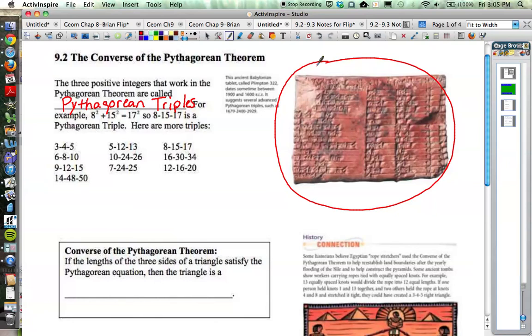Now here are some other more common Pythagorean triples. The 3-4-5, the 6-8-10, and the 9-12-15 ones are quite common. We'll start to recognize those. But all of these are Pythagorean triples. For instance, this one right here would mean that 12 squared plus 16 squared equals 20 squared. And in fact, that's true because 144 plus 256 equals 400. That adds up to 400, so that would be a Pythagorean triple.